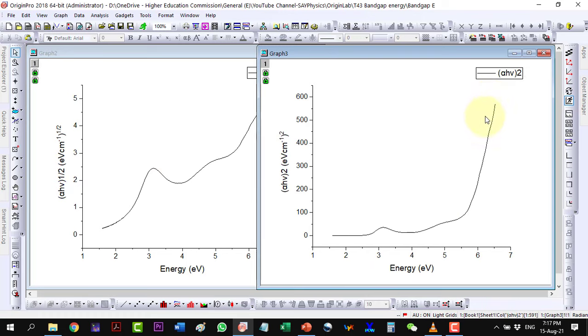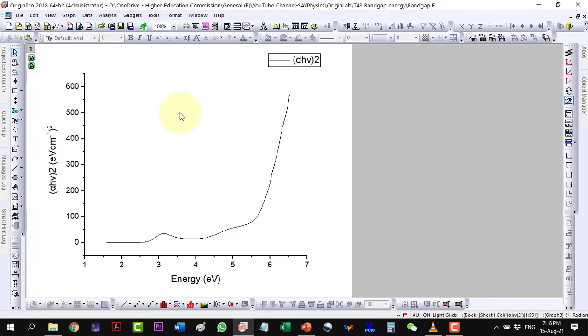Here we can see that the square term shows the best fit for the linear region extrapolation. So let us focus on this one.